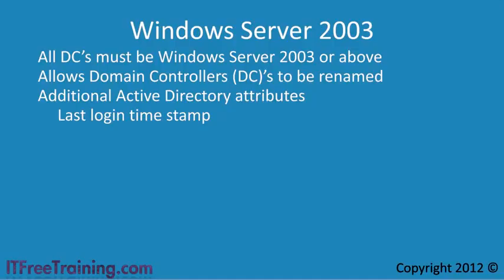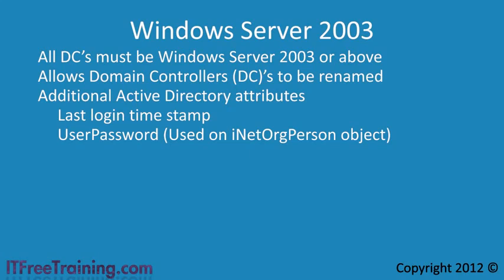Windows Server 2003 domain functional level also includes support for an additional attribute called User Password, added to an object called InetOrgPerson. The InetOrgPerson object is a storage object for a user from a non-Active Directory system. If you use another directory service and want to migrate to Active Directory or use both systems together, this domain functional level adds support to store a password from a third-party directory service inside the InetOrgPerson object, allowing you to import a user and their data into Active Directory.